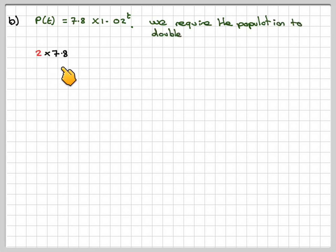So we want 2 times 7.8, which is 7.8 × 1.02^T. If we divide both sides by 7.8, we get 2 = 1.02^T. This is the equation that we need to solve.